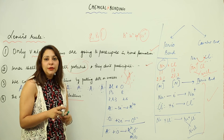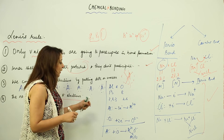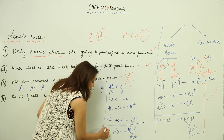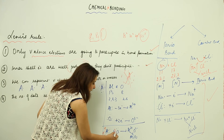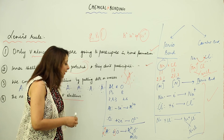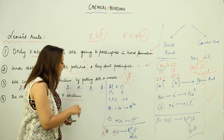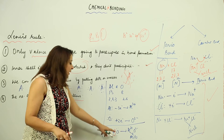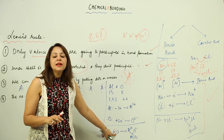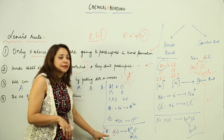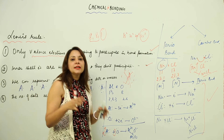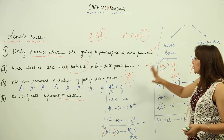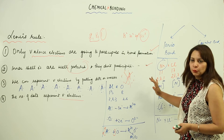After doing the crisscross of charges, we get Al₂O₃. That means two aluminium atoms combine with three oxygen atoms. So we put two aluminium and three oxygen: six electrons are donated by two aluminium, and three oxygen atoms accept those six electrons. After that, we have achieved the stable ionic bond of Al₂O₃. This is how you make an ionic bond.